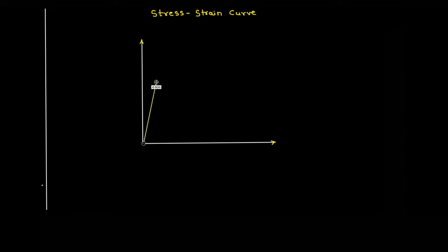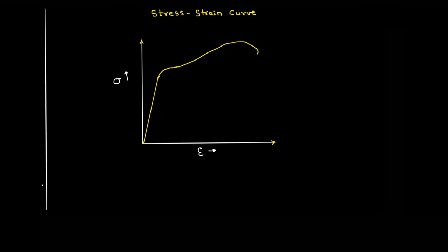For small strain, stress is directly proportional to strain, so you get a straight line. The x-axis is strain (epsilon) and the y-axis is stress (sigma). The graph goes straight for a while, but after some point it no longer remains linear — it changes a little bit, then goes further, then differently again.